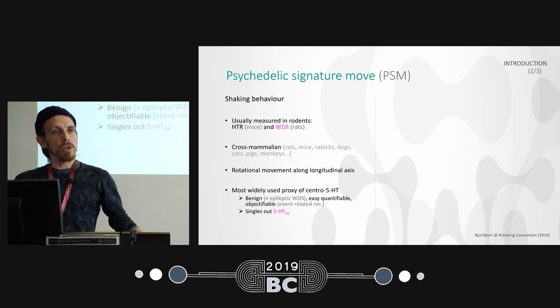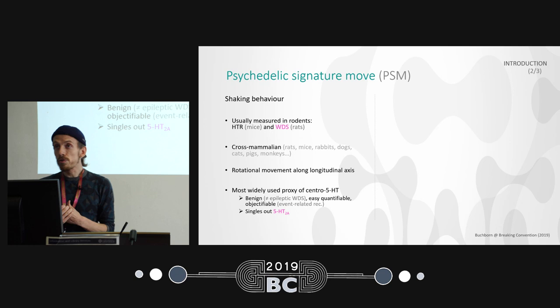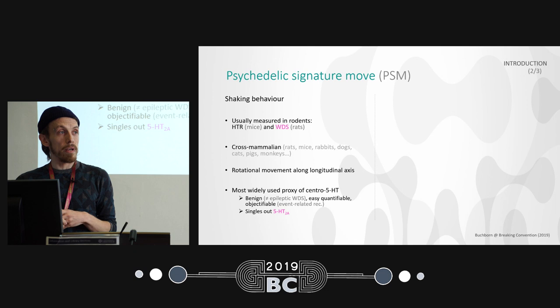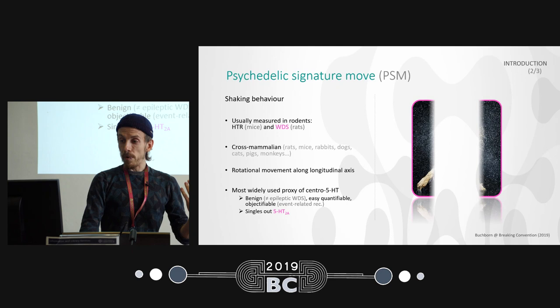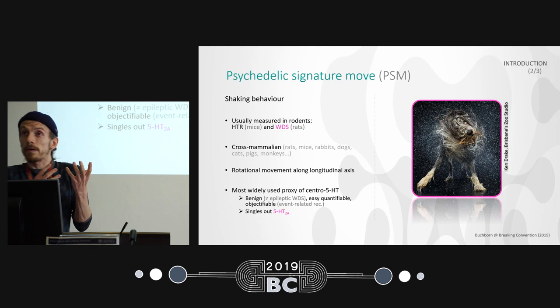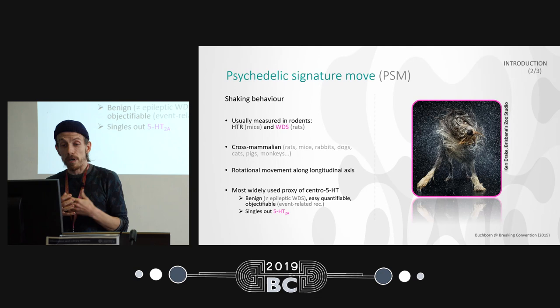The psychedelic signature move — people usually don't call it that; people usually call it shaking behavior or, more commonly, head twitch response or wet dog shake. It's measured in mice or rats but it's actually a cross-mammalian phenomenon — you find it in dogs, cats, pigs, and even in monkeys. It's a rotational movement along the longitudinal axis of the body, and the name 'wet dog shake' derives from the fact that it very much looks like a dog shaking when wet.